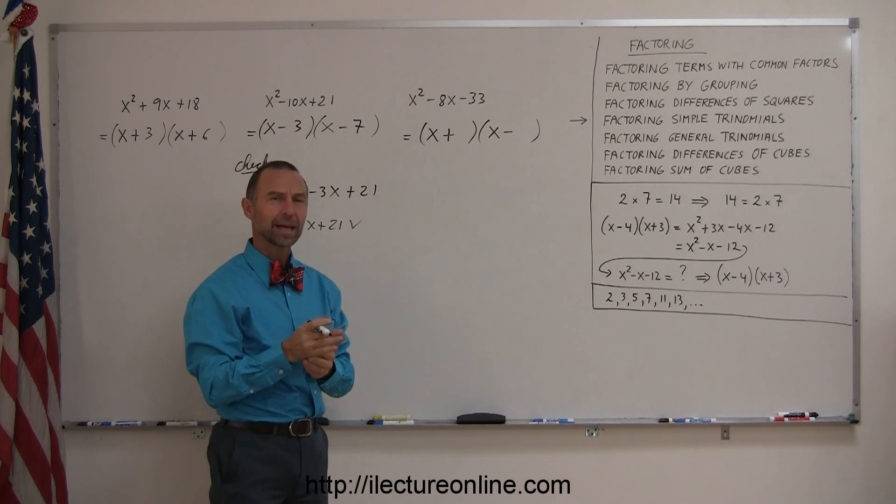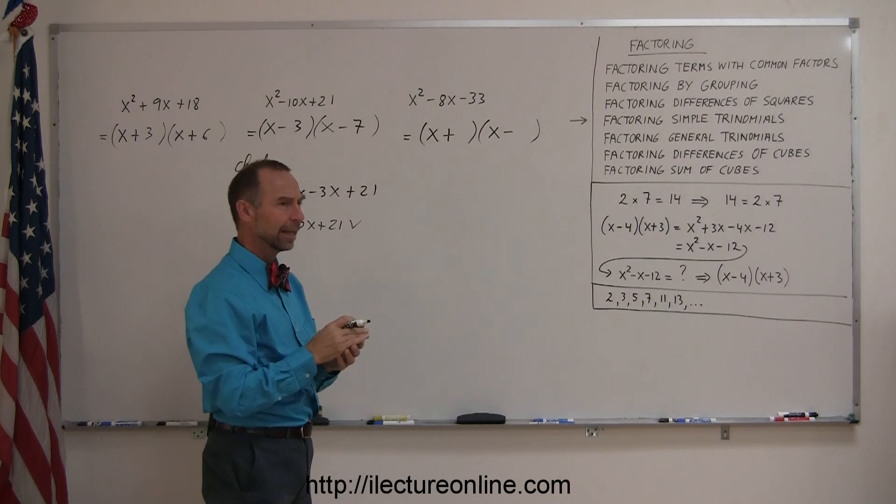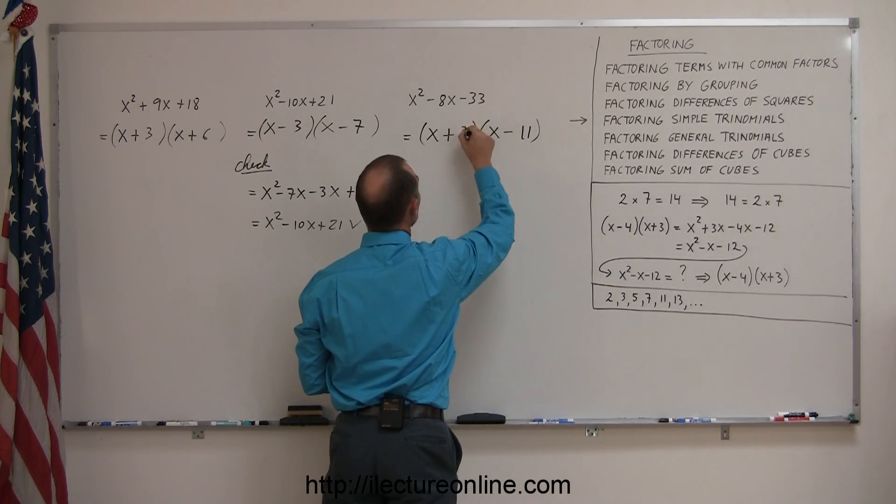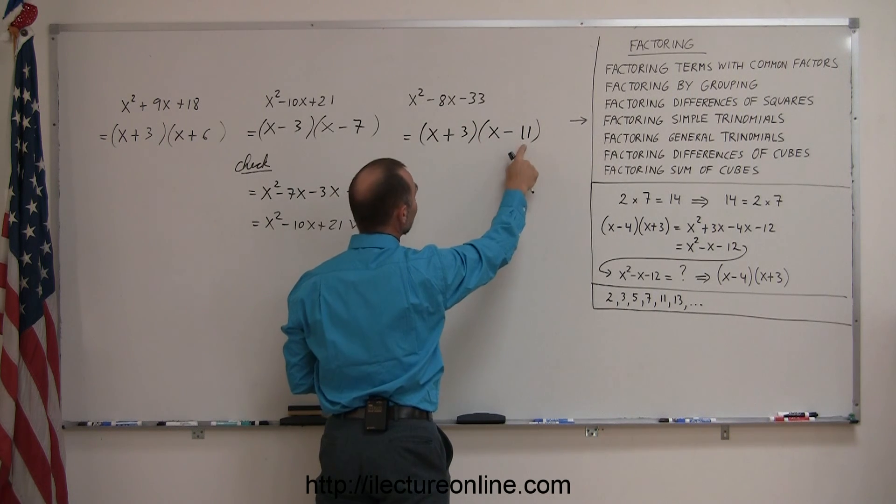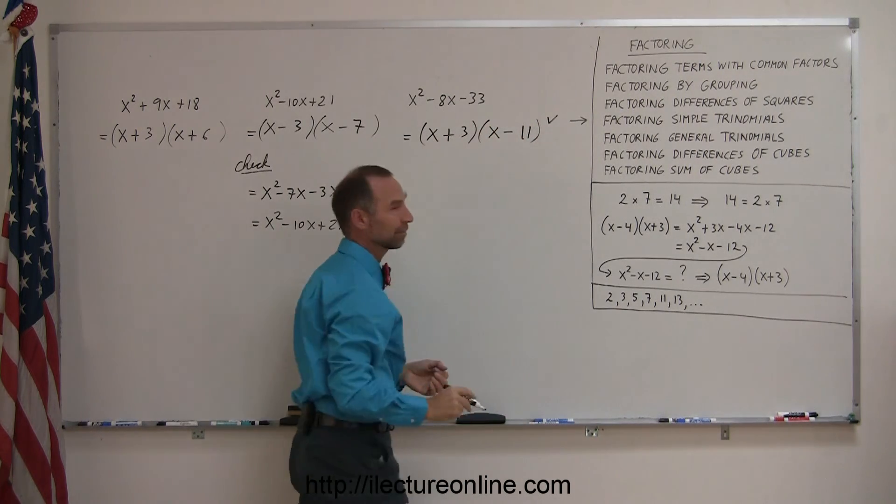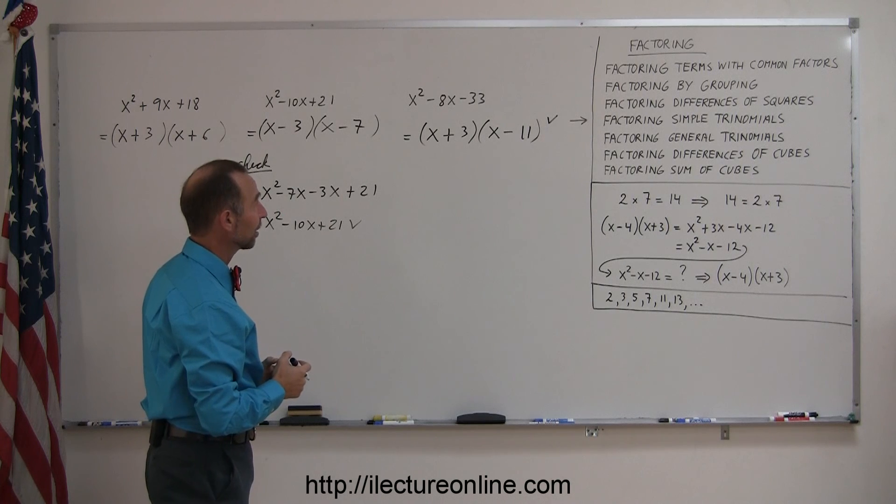33. How about 11 times 3? That seems to do it. Since 11 is the bigger one and the bigger one must be negative, I'm going to put the 11 over here and the 3 over there. Sure enough, a minus 11 plus 3 gives me a negative 8, and a negative 11 times a positive 3 gives me a negative 33, so that must be correct. If you're not sure, multiply everything together and you should see if you get the same result back.